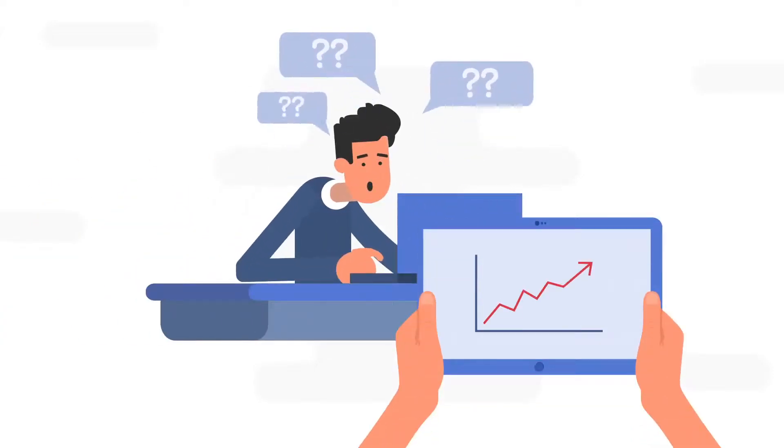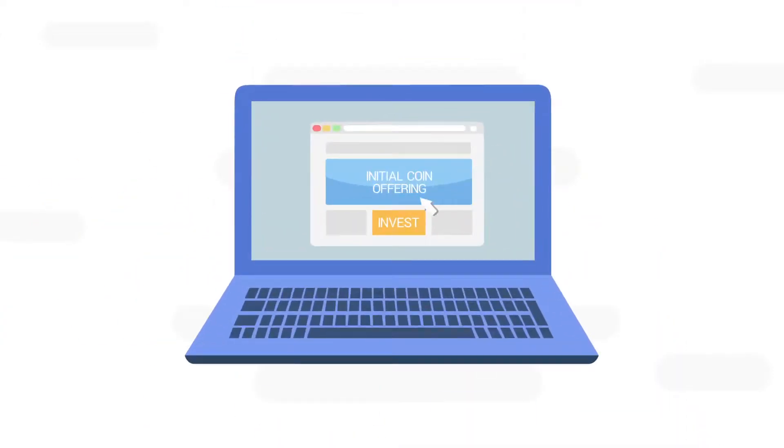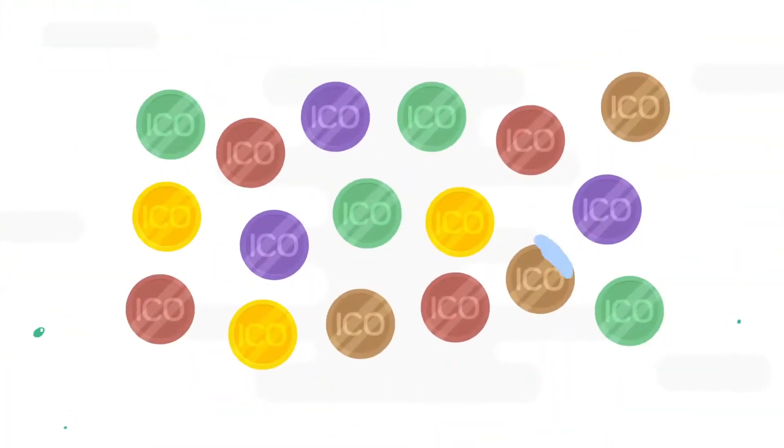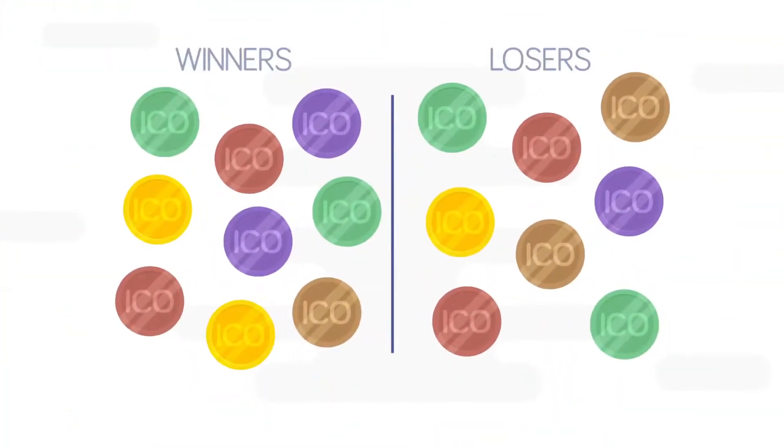So you've been hearing about all these people making money by investing in initial coin offerings. You want to get in on the action, but how do you separate the winners from the losers?